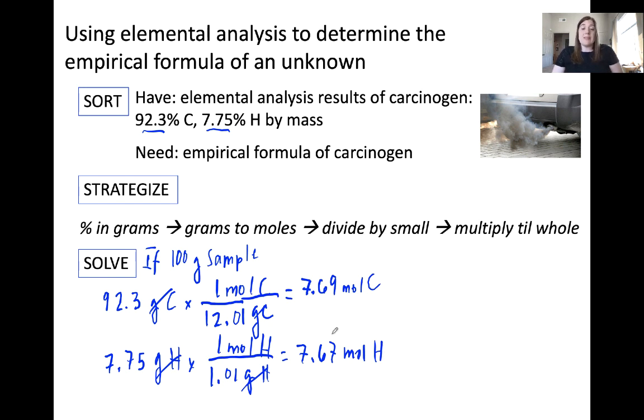Now we need to divide by small. What this means is identifying which mole value is the smallest. In this case, it's 7.67. So we're going to divide all mole values by 7.67. When I do this for hydrogen, I end up getting 1 mole of hydrogen. When I do this for carbon, I end up getting a value that's approximately 1. If we're within .98 or .01, we can effectively round up or down accordingly. What this tells us is the mole ratio of carbon to hydrogen, C1H1.